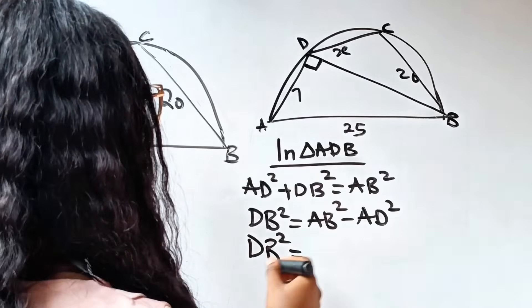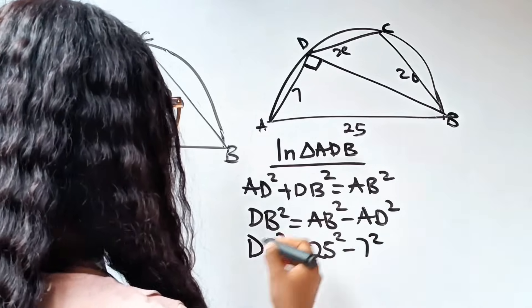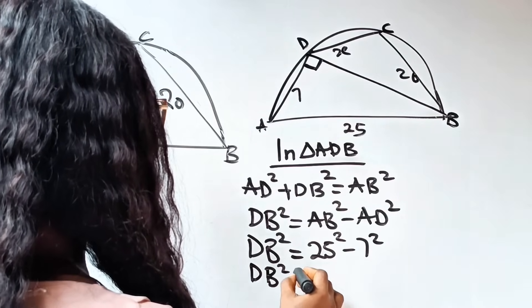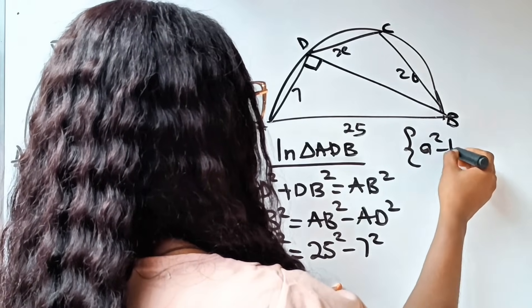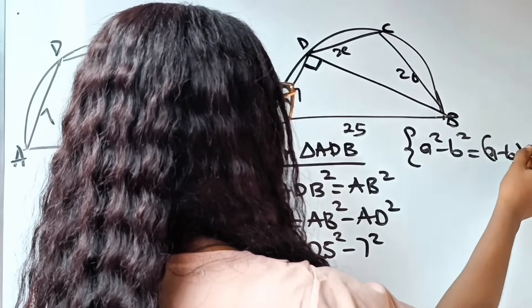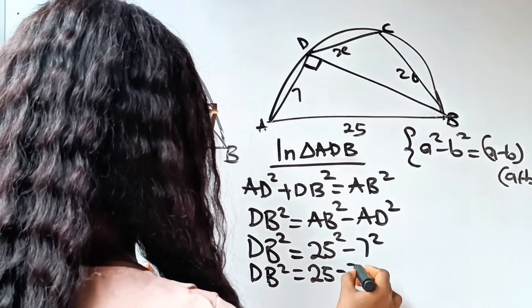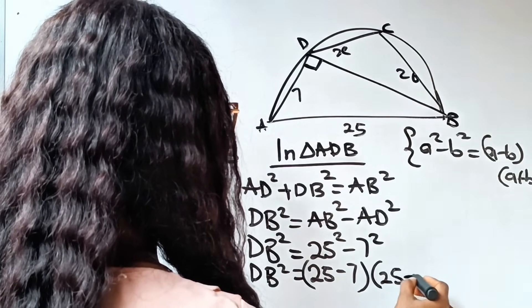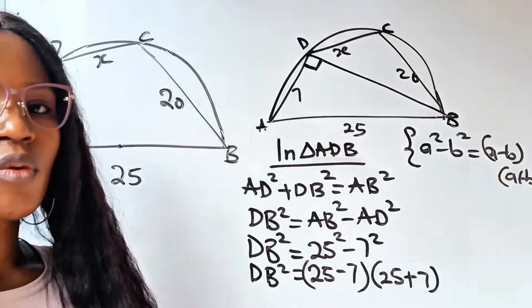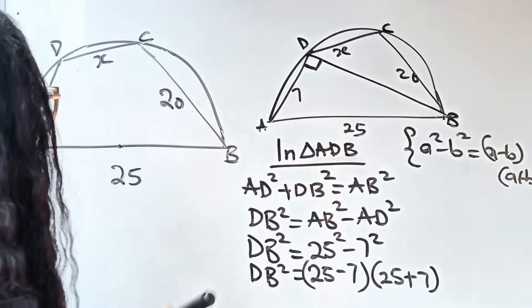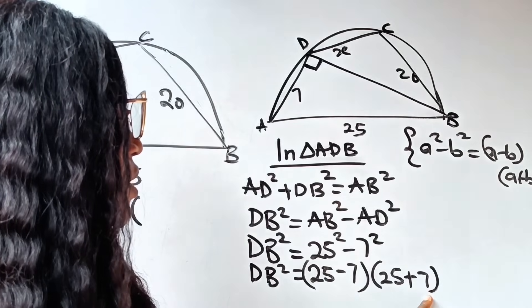DB² = 25² − 7². Using the difference of squares: 25 − 7 = 18, and 25 + 7 = 32, so DB² = 18 × 32.